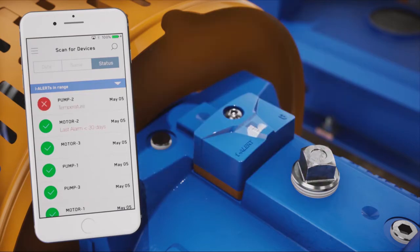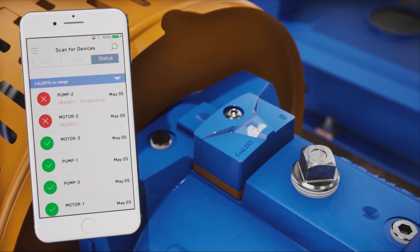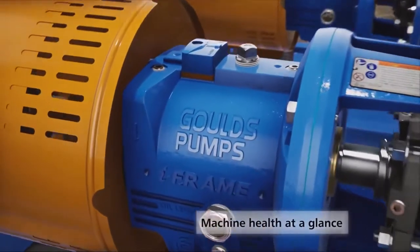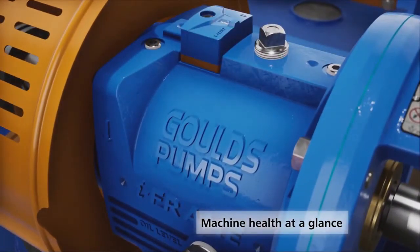With iAlert 2, you can monitor your equipment from a safe distance, even those that are difficult to access. The iAlert 2 will show you the health of your machines at a glance.